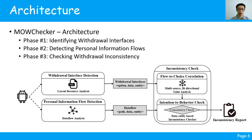We propose a static analysis tool named ModeChecker to detect such inconsistencies. ModeChecker consists of three phases. The first phase identifies the widgets with withdrawal semantics from the layout files. The second phase detects the privacy collection data flows in both the app and third-party libraries. Finally, the inconsistency check phase analyzes inconsistencies with a multi-source bidirectional data analyzer and a consistency checker.